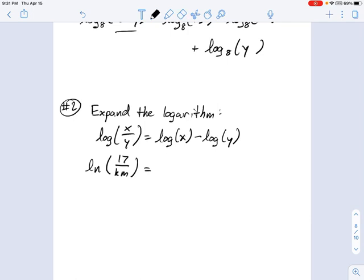So we can break this up one step at a time. I can say this is the natural log of 17, and then because this is in the denominator, it gets a minus sign. So what's in the denominator? km. So it's minus natural log of km. Well, I can expand km further.